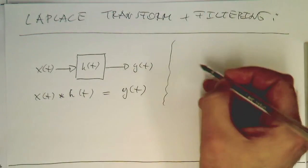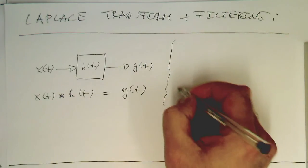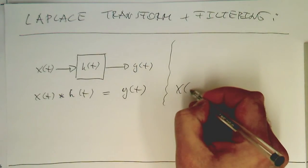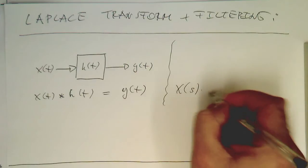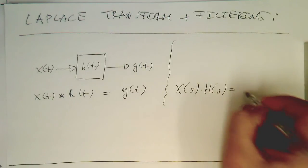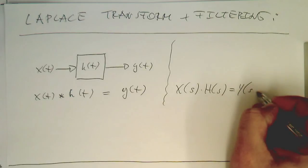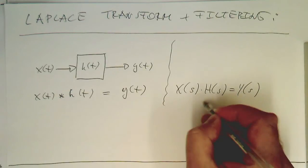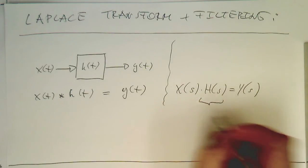In the Laplace space here, we could write then just X of s multiplied by H of s gives us Y of s. That's the multiplication operation. This is here the Laplace transform of our filter.